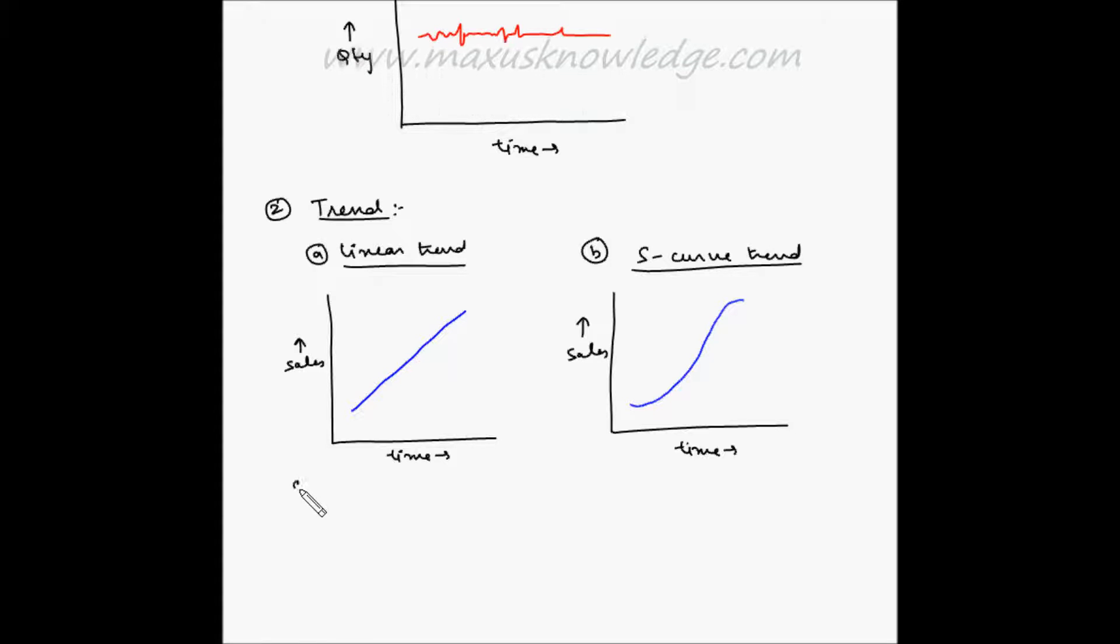Third is asymptotic trend. Time versus sales and an asymptotic trend can be represented as this line. An asymptotic trend starts with the highest growth at the beginning, which eventually tapers off.